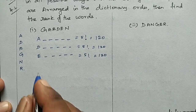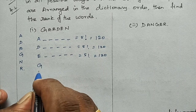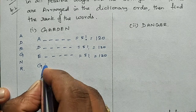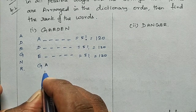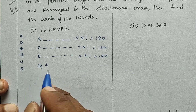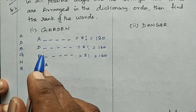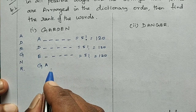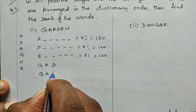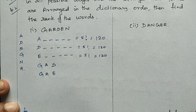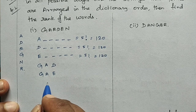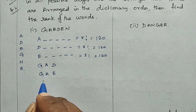For words starting with G, next letter A. Under GA, consider remaining letters. Words starting with GAD: remaining 4 letters give 4 factorial = 24. Words starting with GAE: similarly counted.